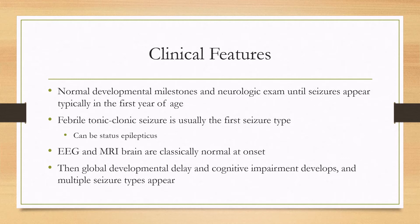At onset, the neurologic exam, EEG, and MRI are typically normal. But then after the seizures develop, they'll start having some developmental delay, cognitive impairment, and multiple seizure types appearing.